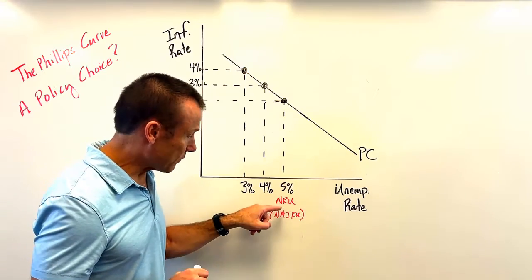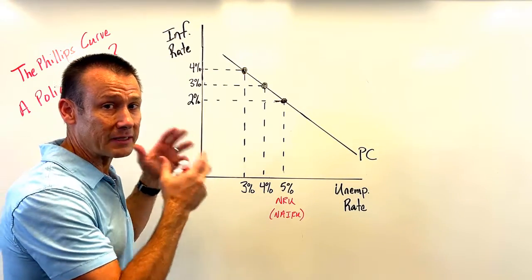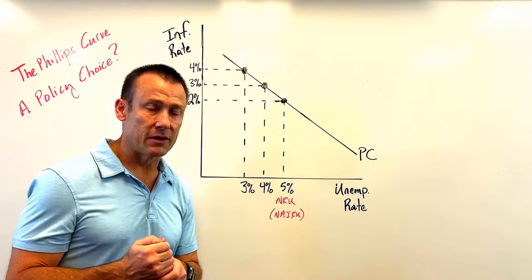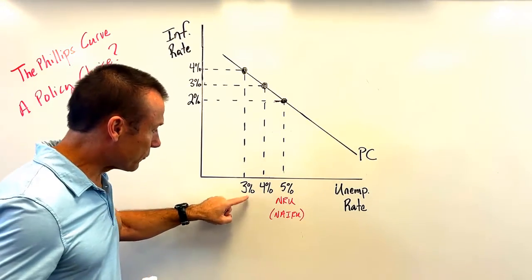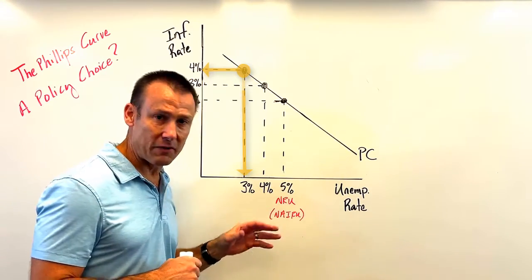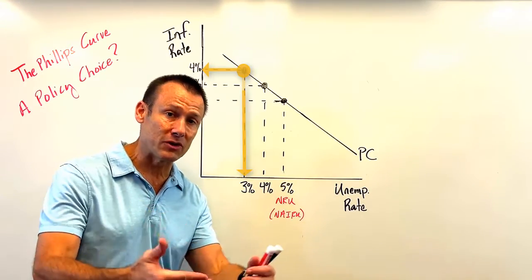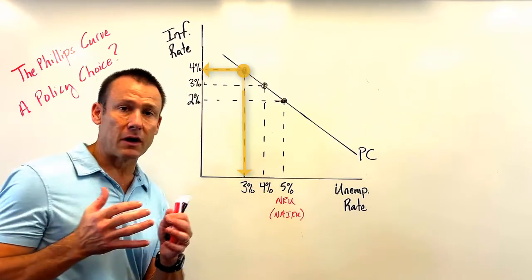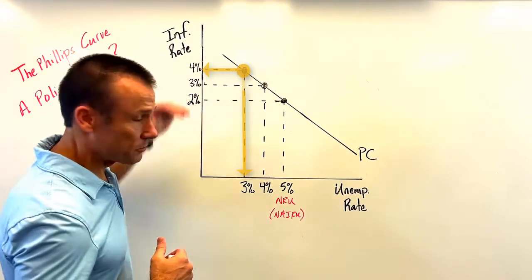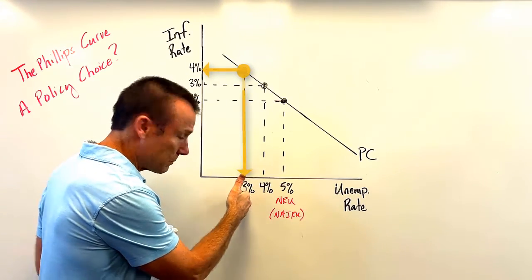It is this idea of the NAIRU that made it so that the Phillips Curve was no longer seen as a policy choice. Imagine policy makers say, let's go with a 3% unemployment rate — yes, we accept a 4% inflation rate, but 3% is way better than 5%. In the US, every 1% of unemployment equates to about 1.6 million jobs, so going from 5% to 3% means 3.2 million more people employed. So we decide to pursue a 3% unemployment rate with a 4% inflation rate.